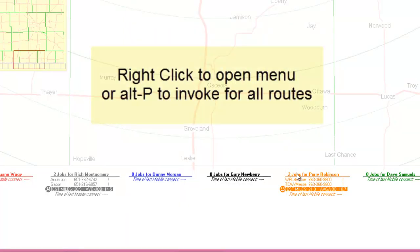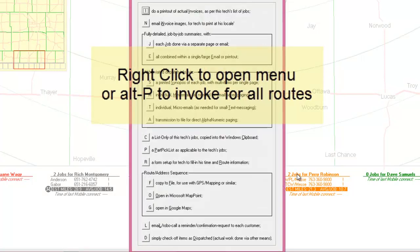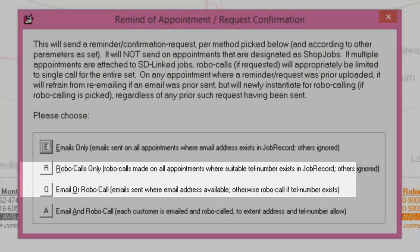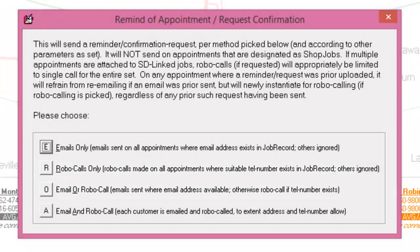The next feature you can launch from the Dispatch Map is robocalling. You have multiple options here. If you're already using SD CyberOffice, you can choose to send robocalls, email confirmations, or both. This option provides direct integration and appointment confirmation.